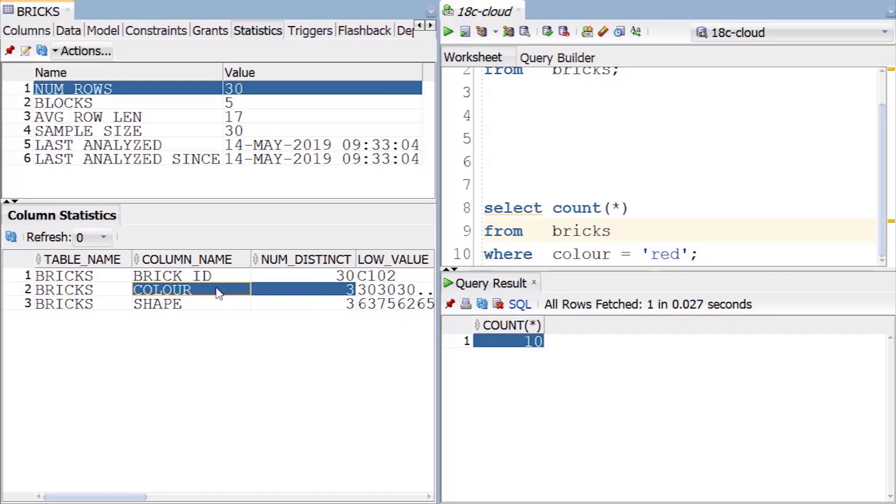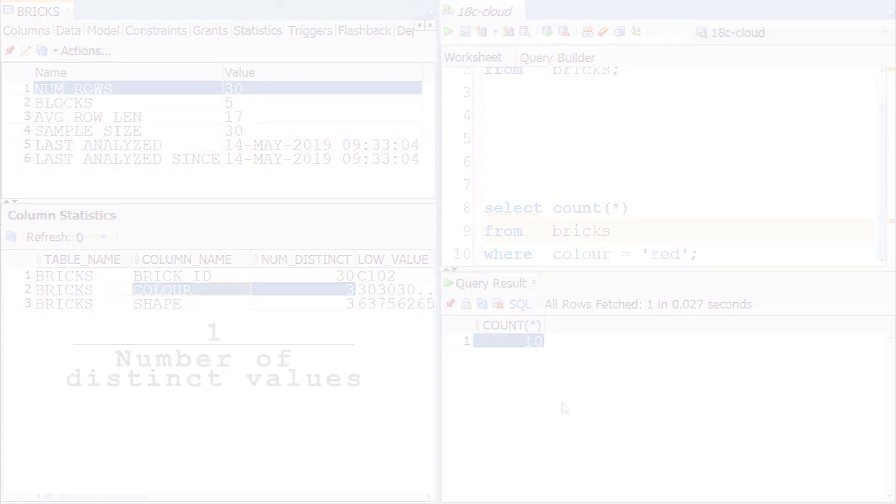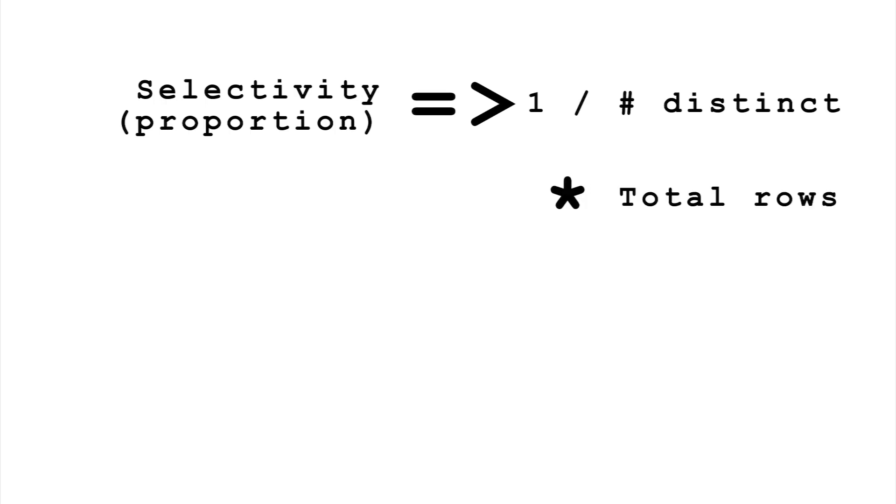The database calculates this fraction as 1 divided by the number of distinct values in the column you're filtering on. This gives the selectivity of your filter. The proportion of rows in the table the database expects this WHERE clause to return. To estimate how many rows you'll get, it then multiplies the selectivity by the total number of rows stored in the stats to give the cardinality.